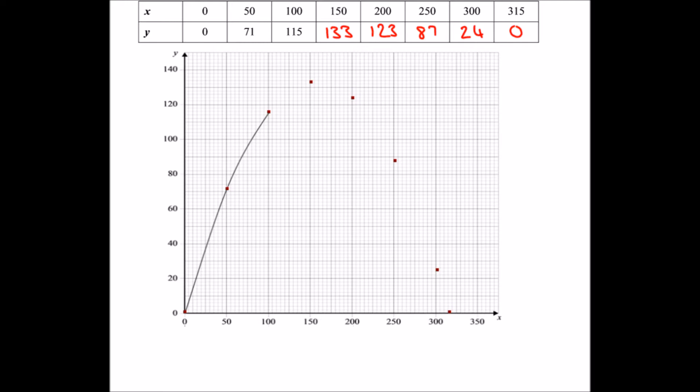The key thing is to have a look at your scale. You can see on our x axis, the big squares are going up in 50s, which means every small square is worth five. On the y axis, every big square is 20, which means every small square is two. So using that information, we can plot our points. The mark scheme will let you be within half the square, which isn't very much at all. So you need to be really precise when you're doing this.